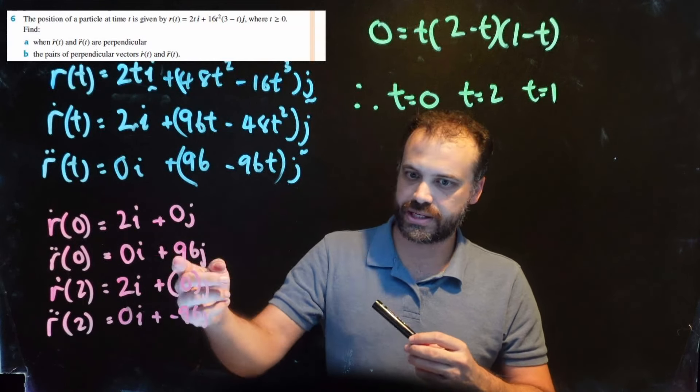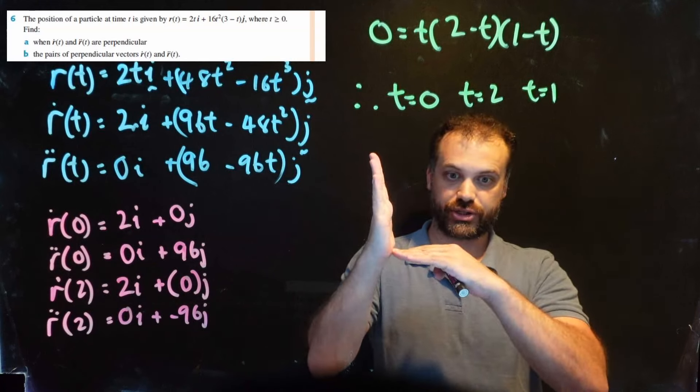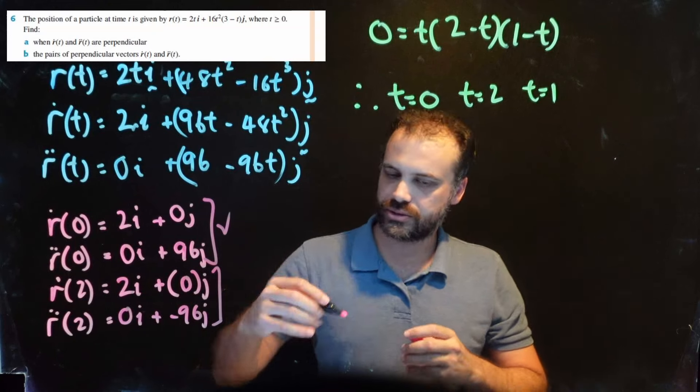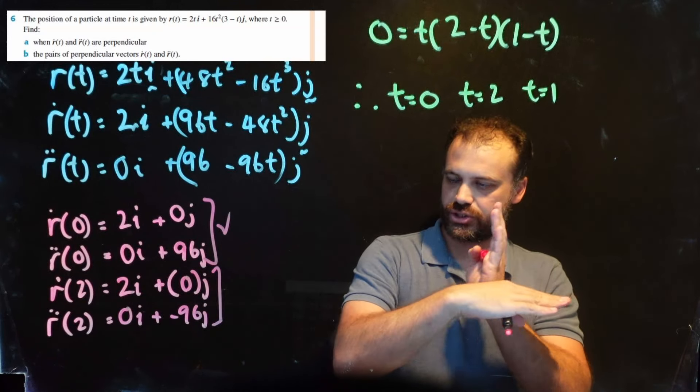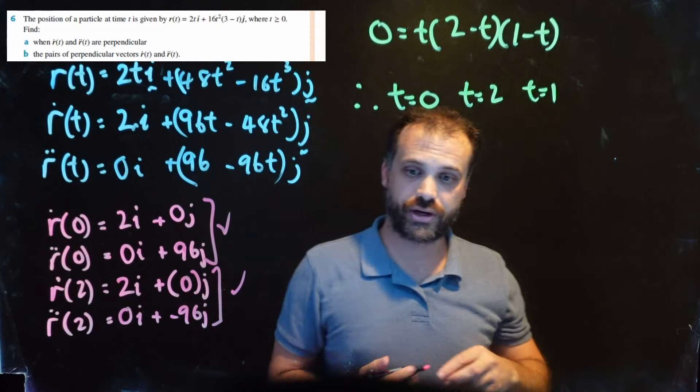So look at these pairs of vectors. This one is 2 in the i direction, this one is 96 in the j direction - very clearly at right angles to each other. So yes, I agree. These ones here: this one is 2 in the i direction, negative 96 in the j direction, so very clearly at right angles to each other. Watch what happens when we do t=1.